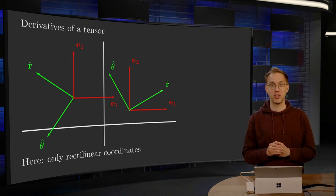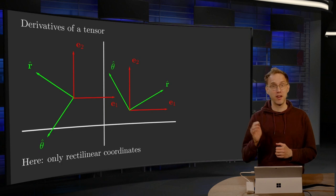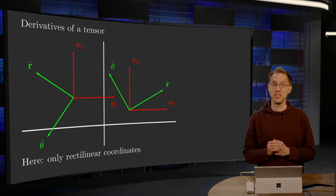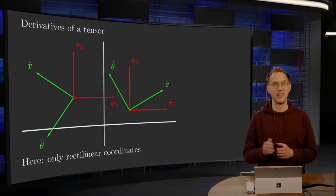The basis vectors r hat and theta hat vary from place to place. So if you differentiate, you'll have to take this into account. Doing all of this properly requires quite some effort, and I'm not going to do that. Why not?